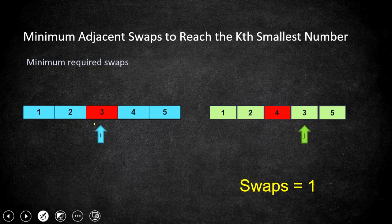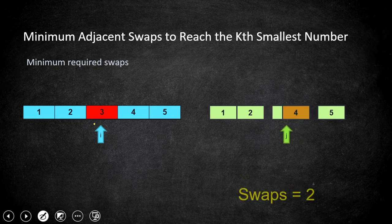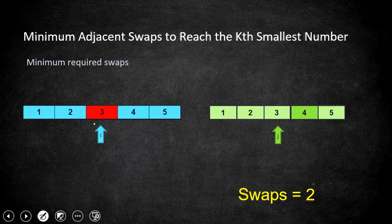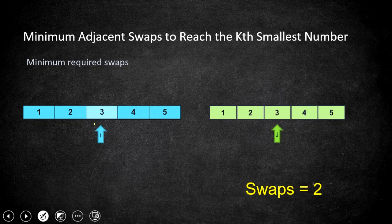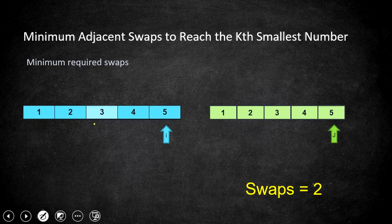J continues swapping 3 toward i's position. After one more swap, 3 reaches its correct position matching the target. So far we've counted two swaps. Both pointers i and j then advance simultaneously. Positions 4 and 5 both match in the original and target, so iteration completes. Total swaps required is two. If any further differences are found, j repeats the process of locating and bubbling the correct digit back.